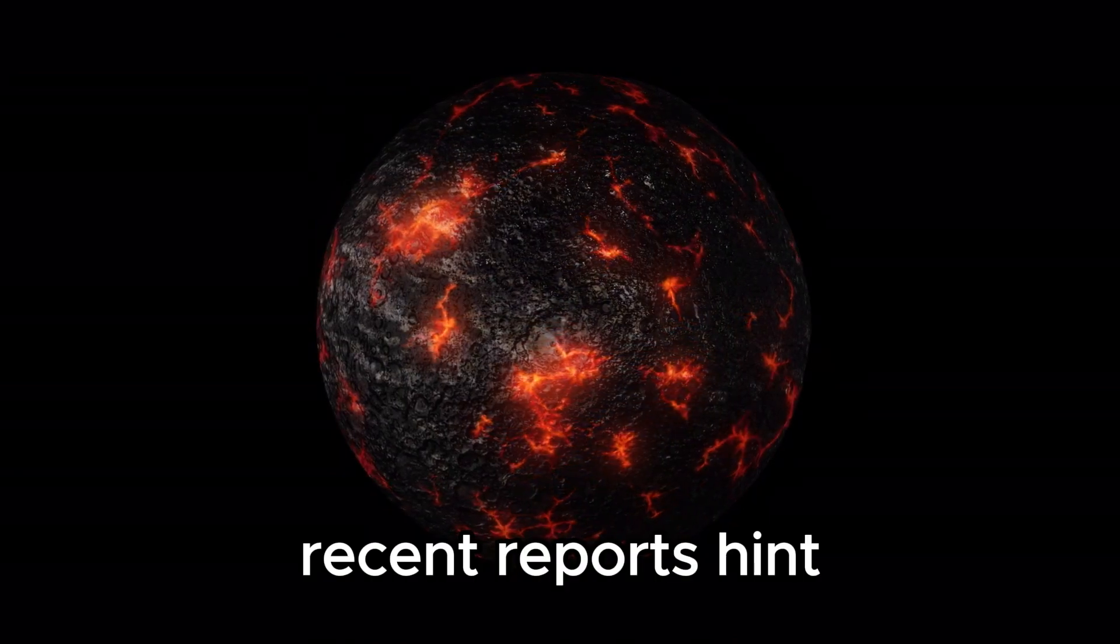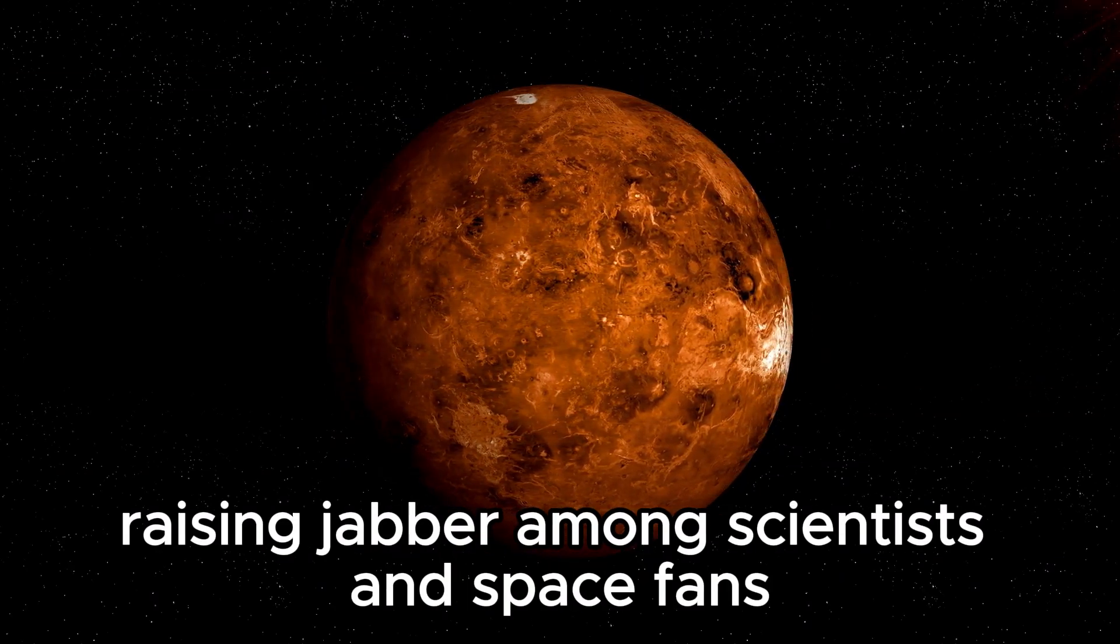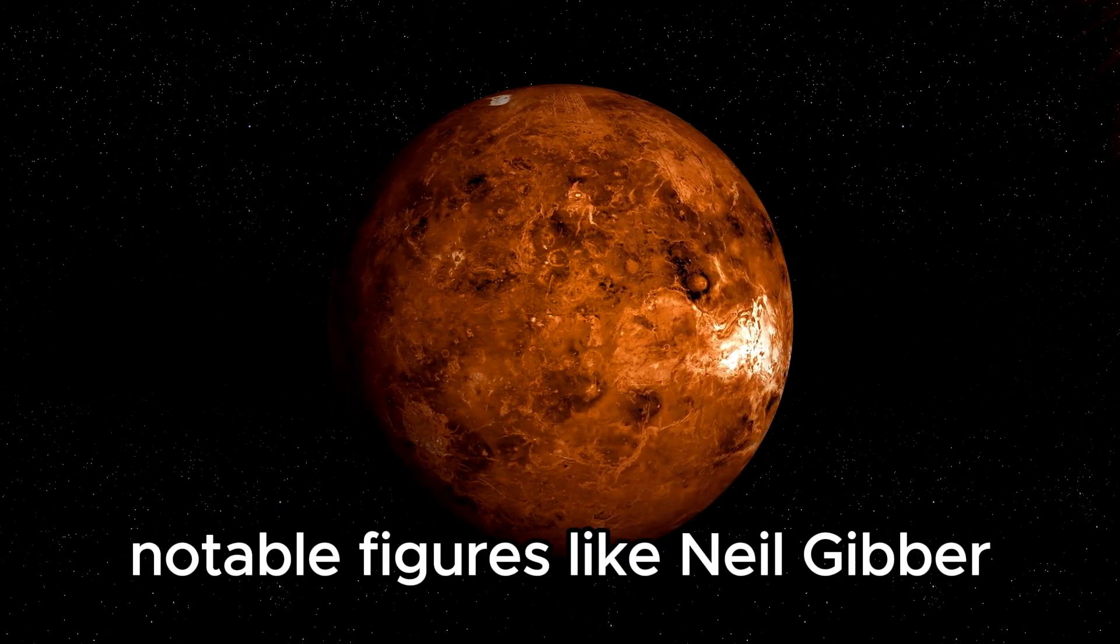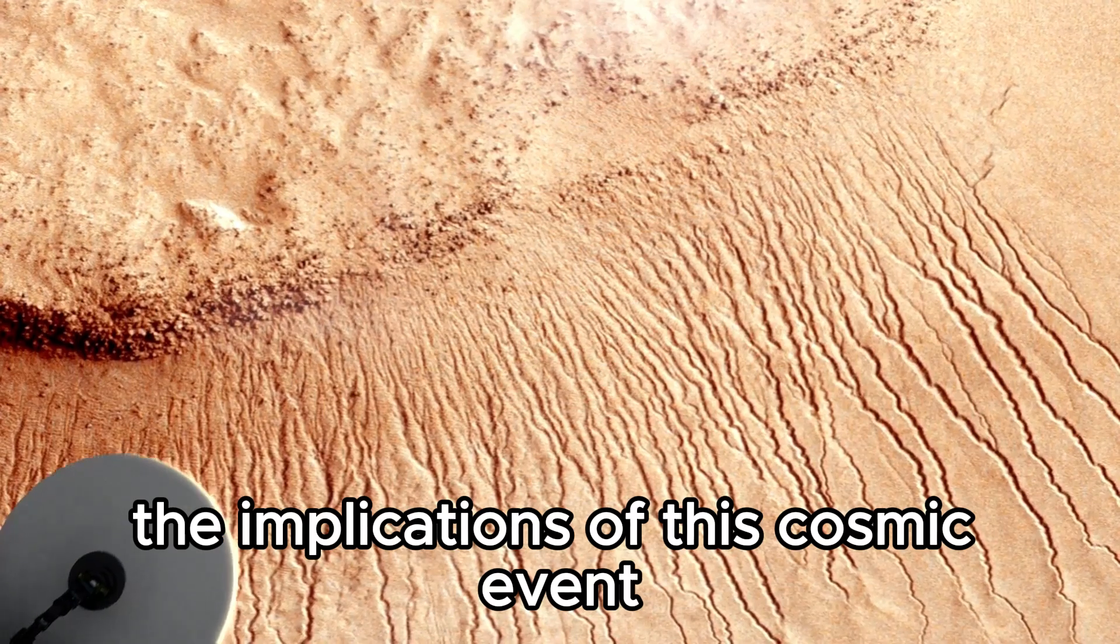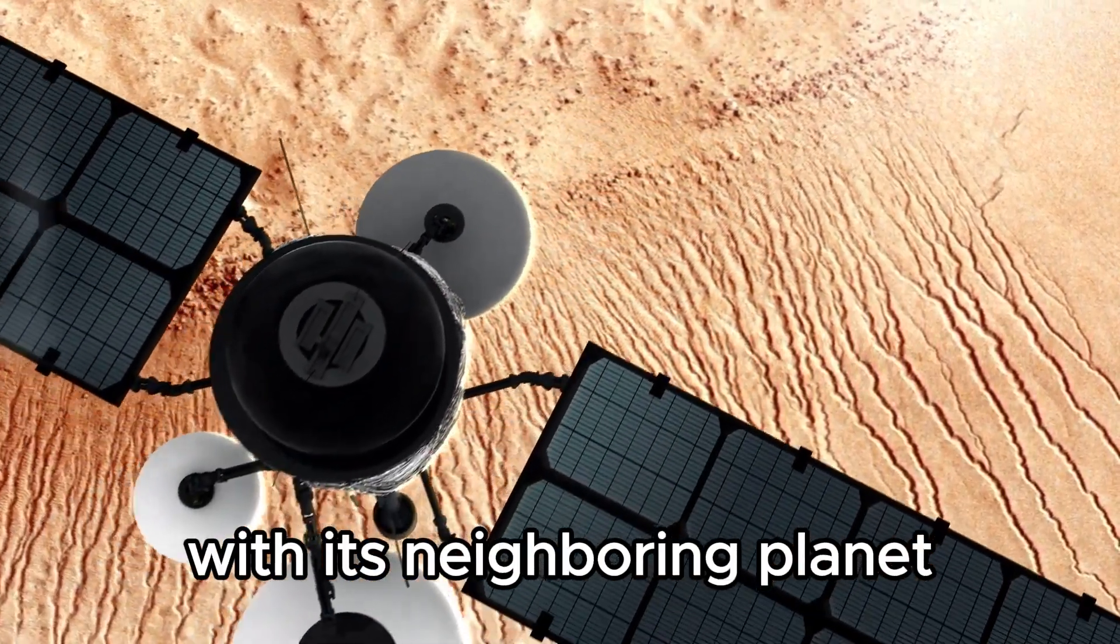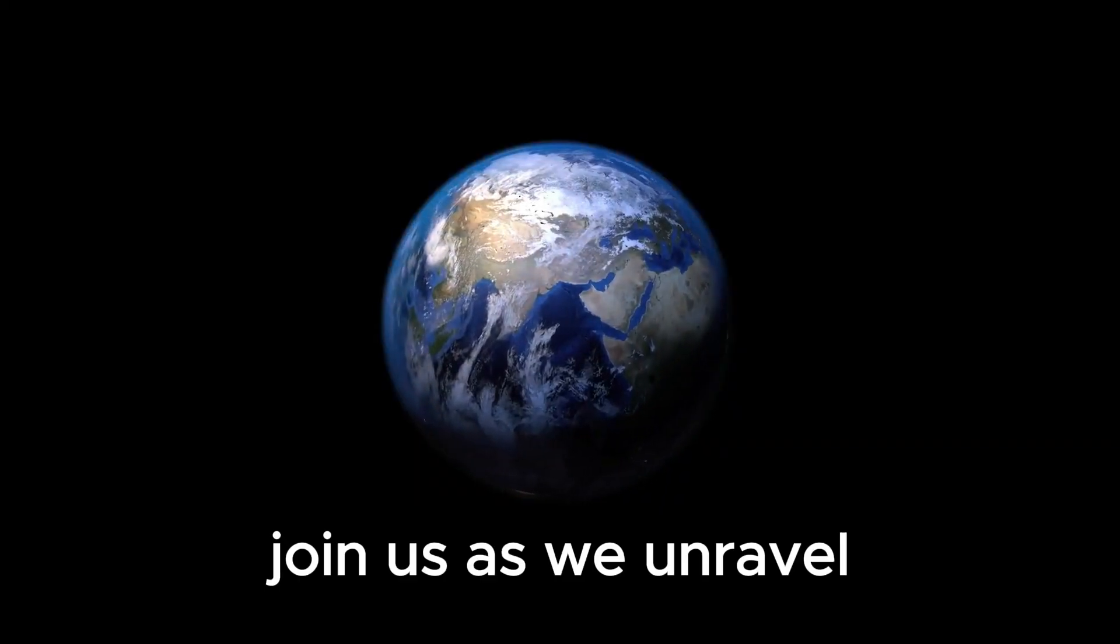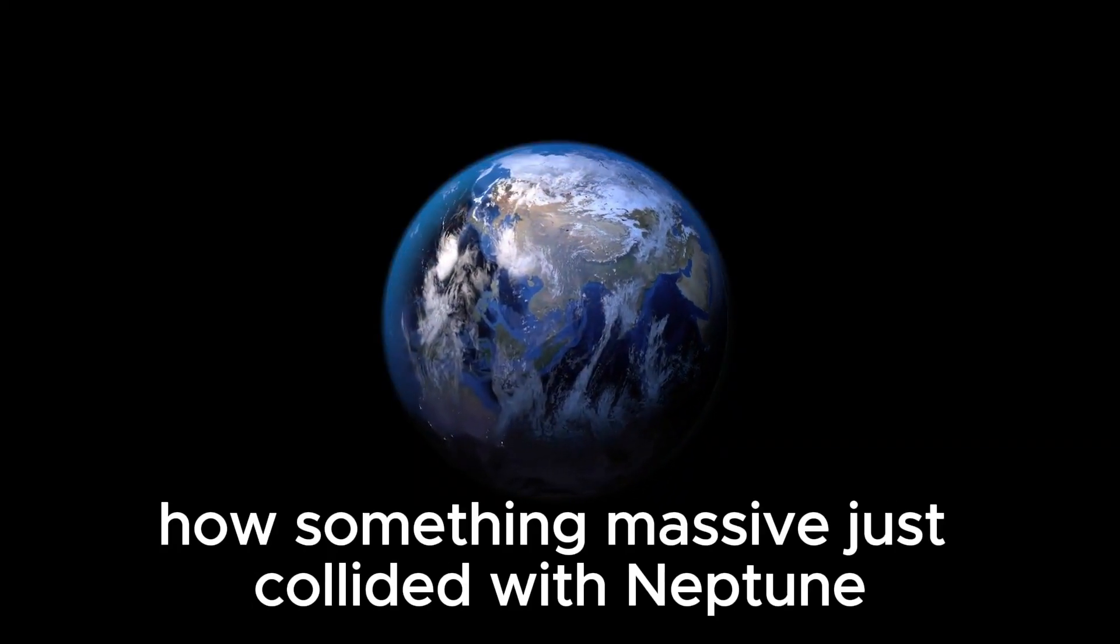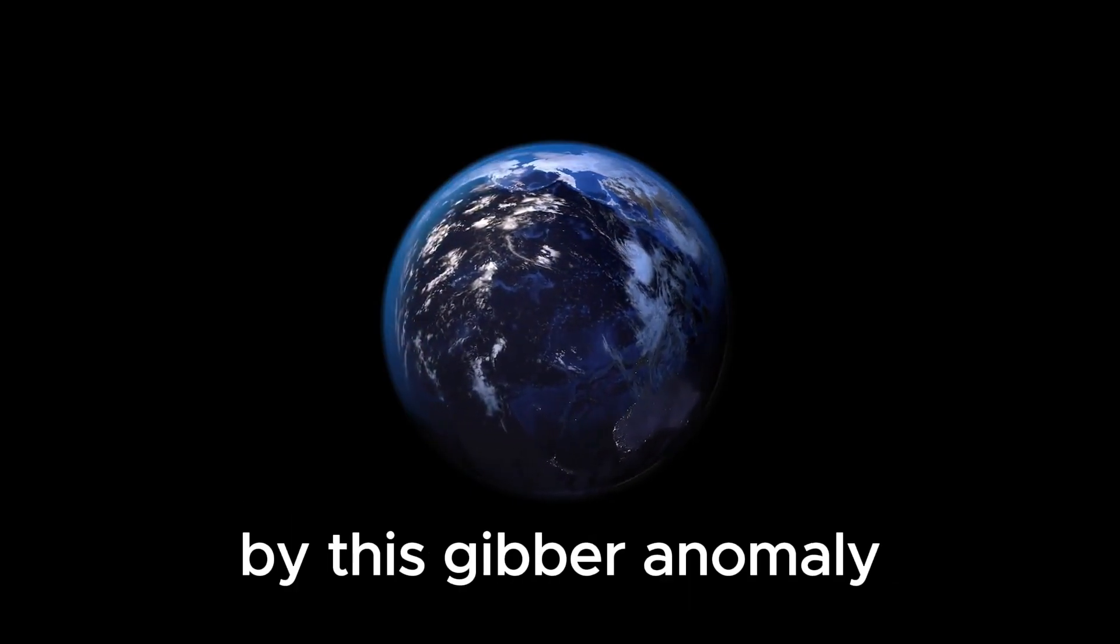Recent reports hint at a possible encounter with Neptune, raising concern among scientists and space fans. Notable figures like Neil deGrasse Tyson and Michio Kaku have sounded alarms about the implications of this cosmic event. But how did Pluto end up on a collision course with its neighboring planet? Join us as we unravel how something massive just collided with Neptune and how scientists have been left worried by this anomaly.